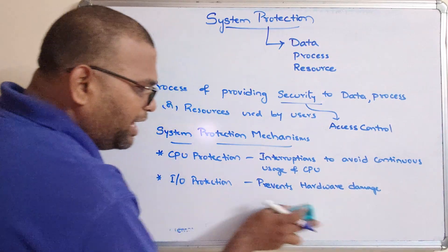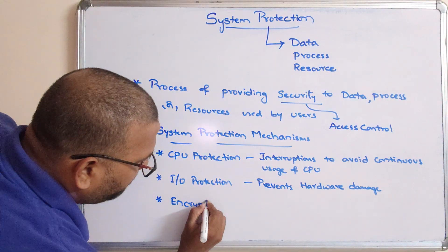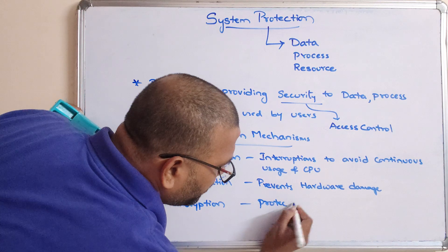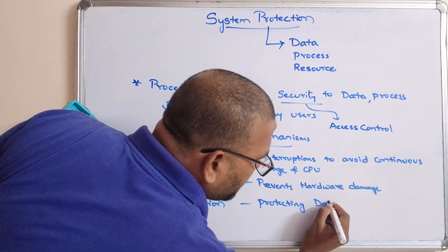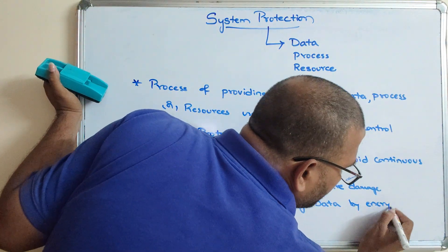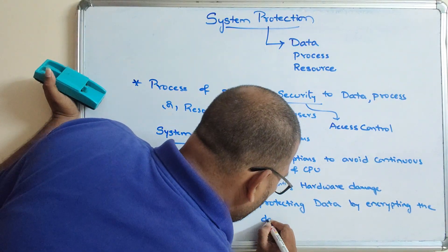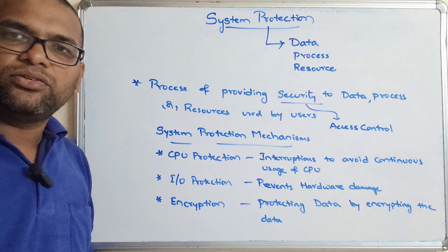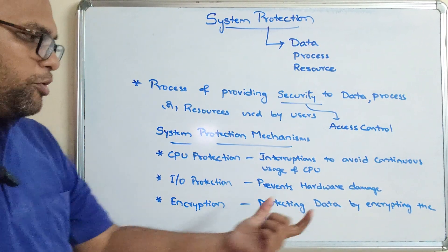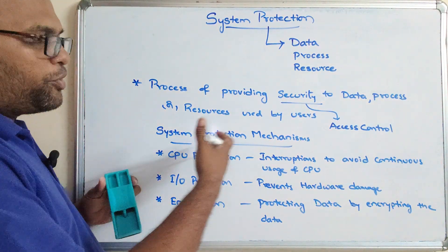The next mechanism, and also very important, is encryption. Encryption means protecting data by encrypting it. Encrypting data means converting it from a readable format to an unreadable format, so that kind of protection is given for data in order to avoid unauthorized access.